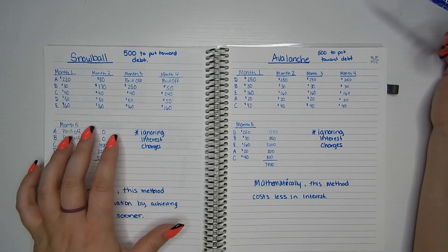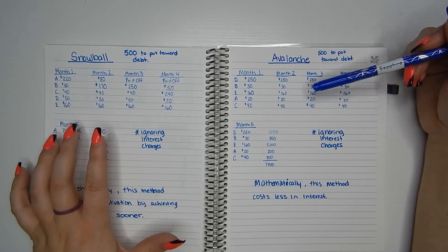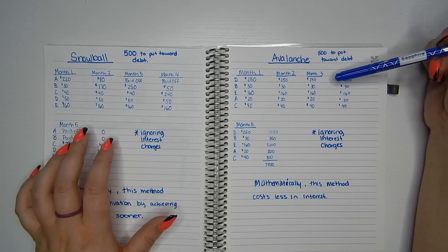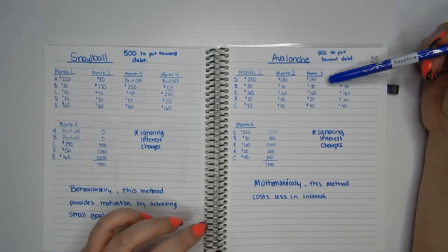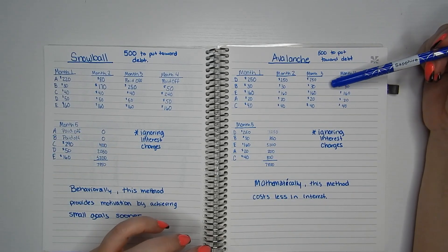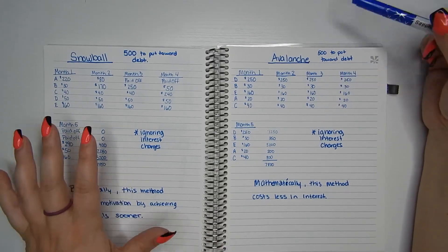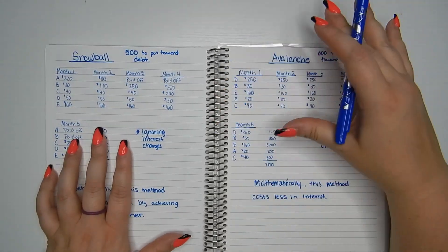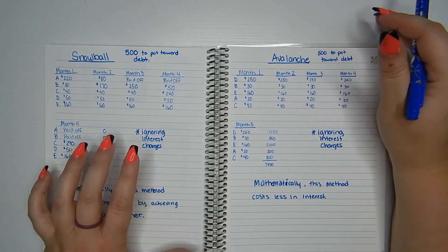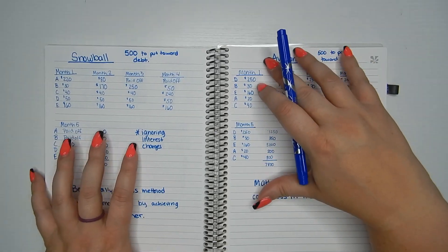I started with the snowball. And then when I had, I think, two debts left, then I started attacking the one with the higher interest and focused on getting that paid off. So I started with snowball. And then as I got more of my debt paid off and became more consistent with that payoff, I did switch to avalanche.